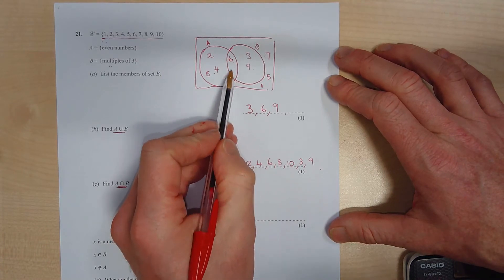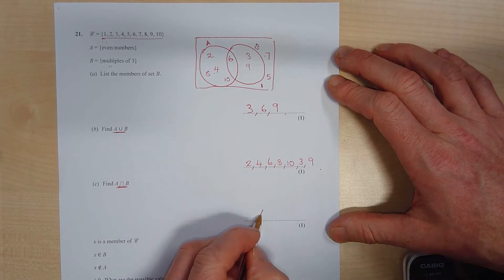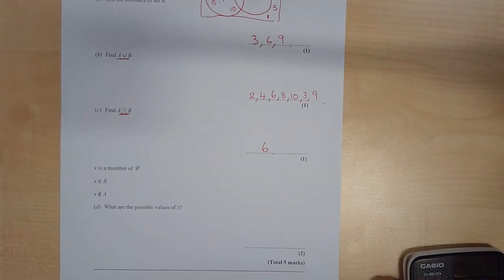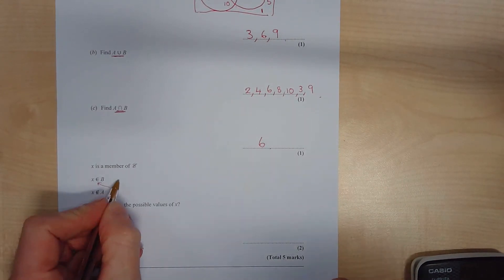Now this is called the intersection, and this is just a bit in the middle. So this is this bit here, the middle circle or the middle kind of overlapping part. So that is just the number 6. Okay.